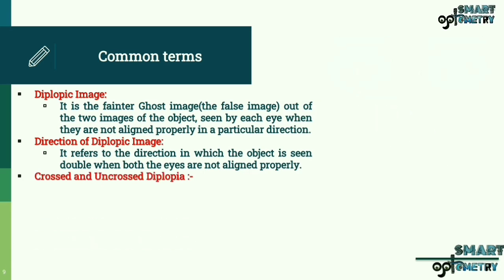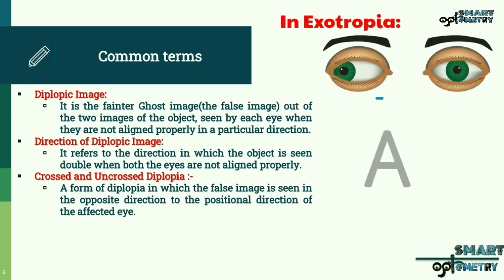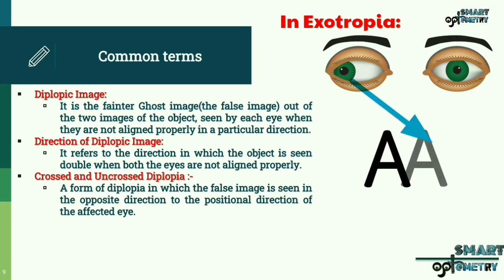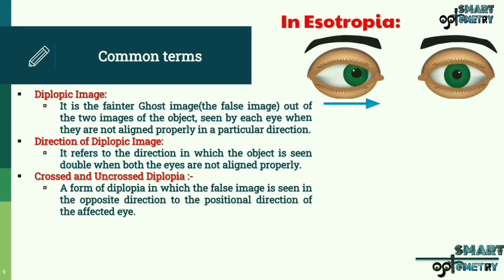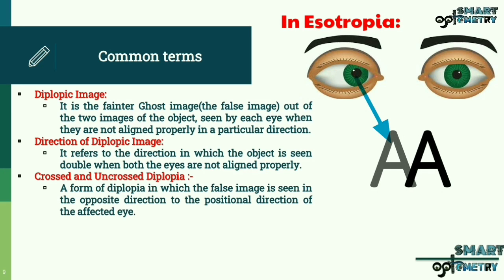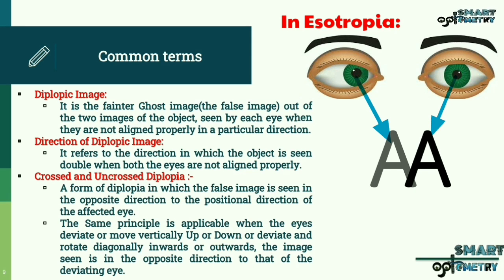Crossed and uncrossed diplopia is a form of diplopia in which the false image is seen in the opposite direction to the positional direction of the affected eye. For example, in exotropia the eye turns out and the image is seen moving inwards towards the nose, appearing crossed. In esotropia the eye turns in and the image is seen moving outwards, away from the nose, appearing uncrossed. The same principle applies when the eyes deviate vertically up or down, or deviate and rotate diagonally — the image is seen in the opposite direction to that of the deviating eye.